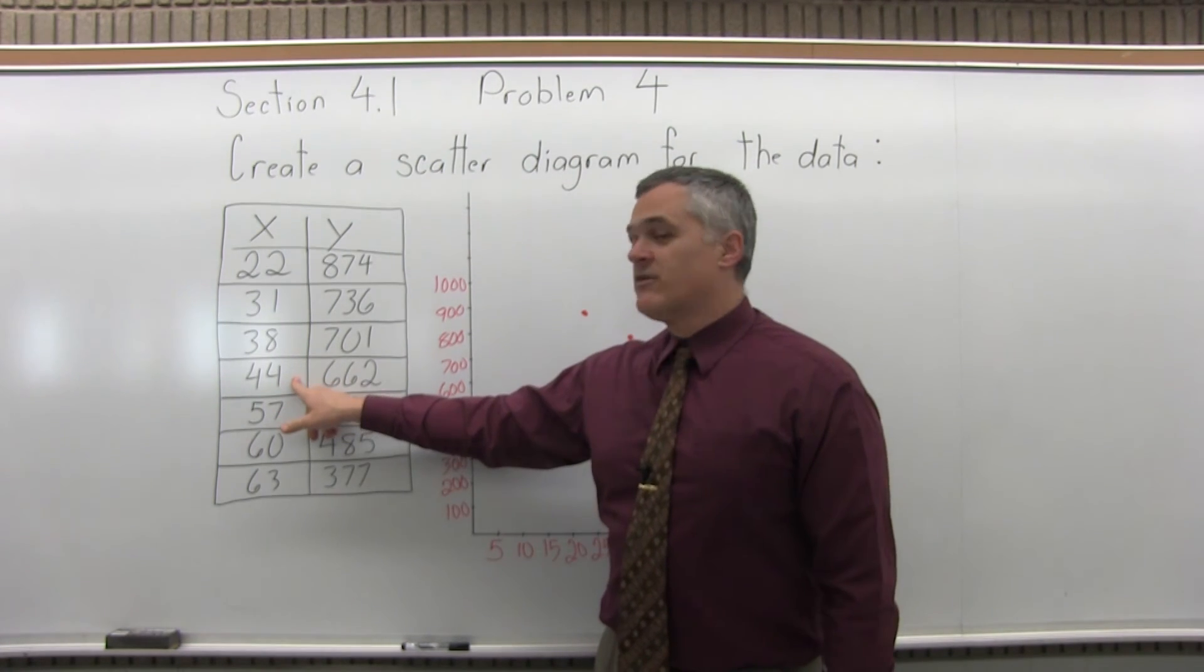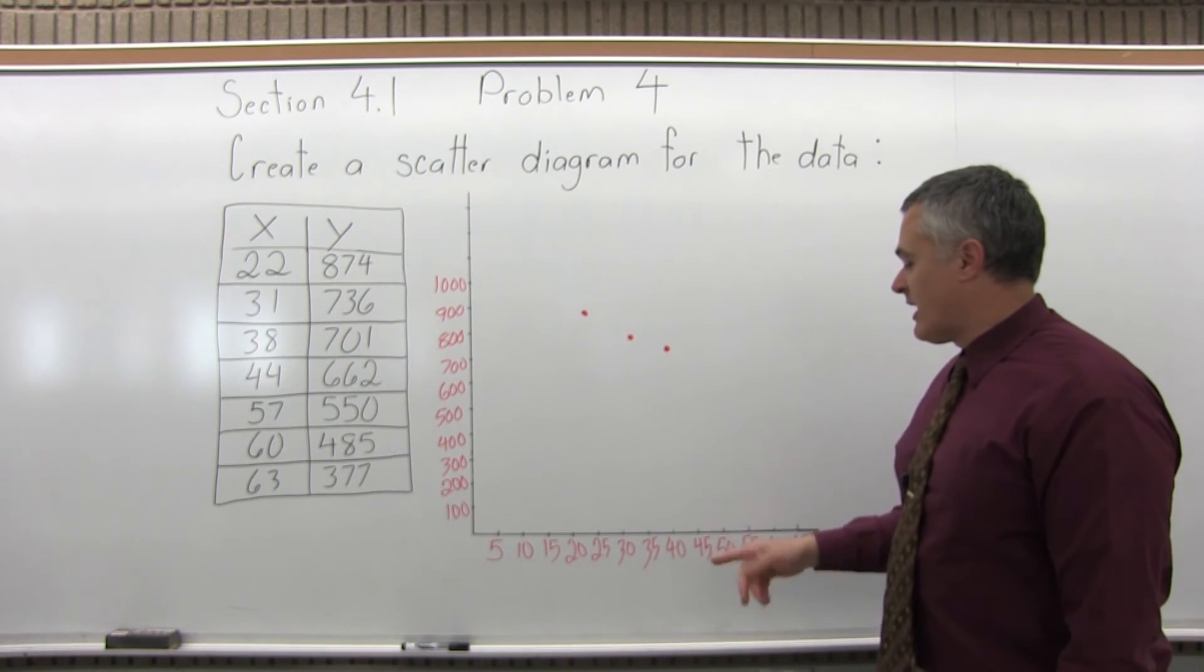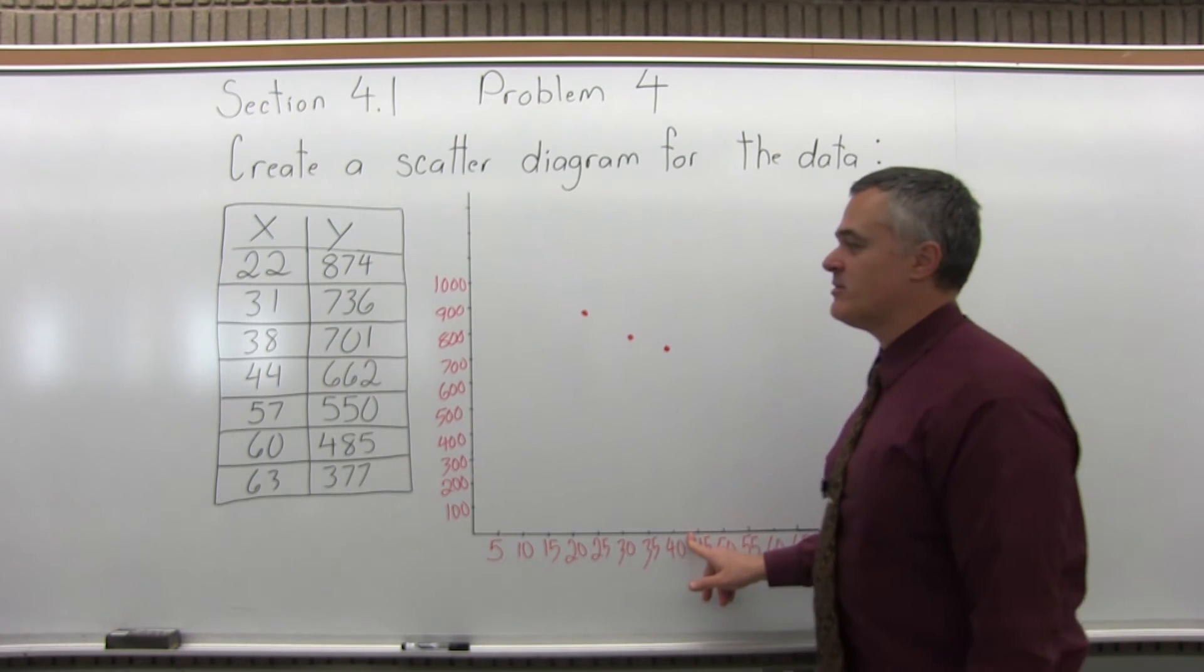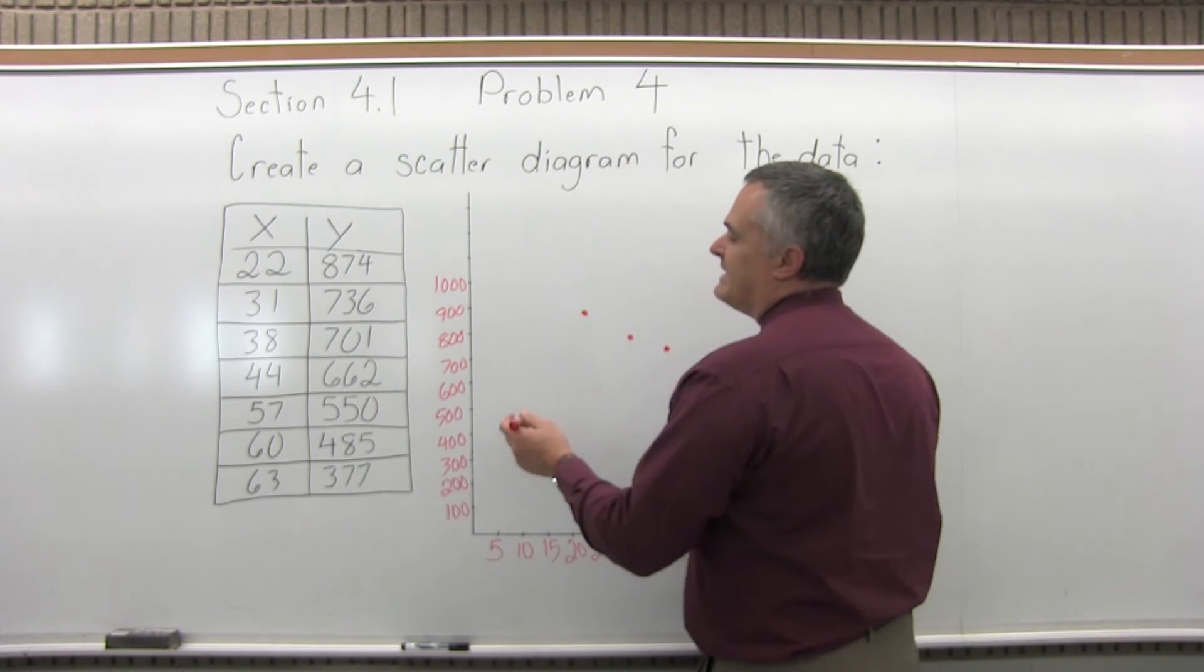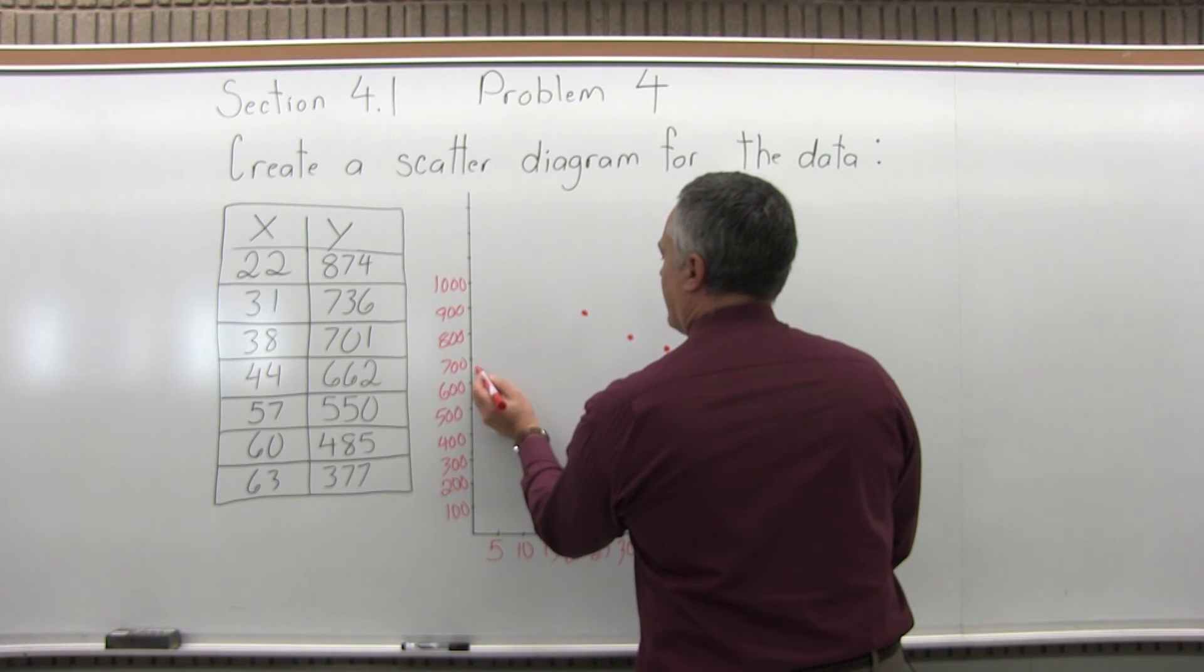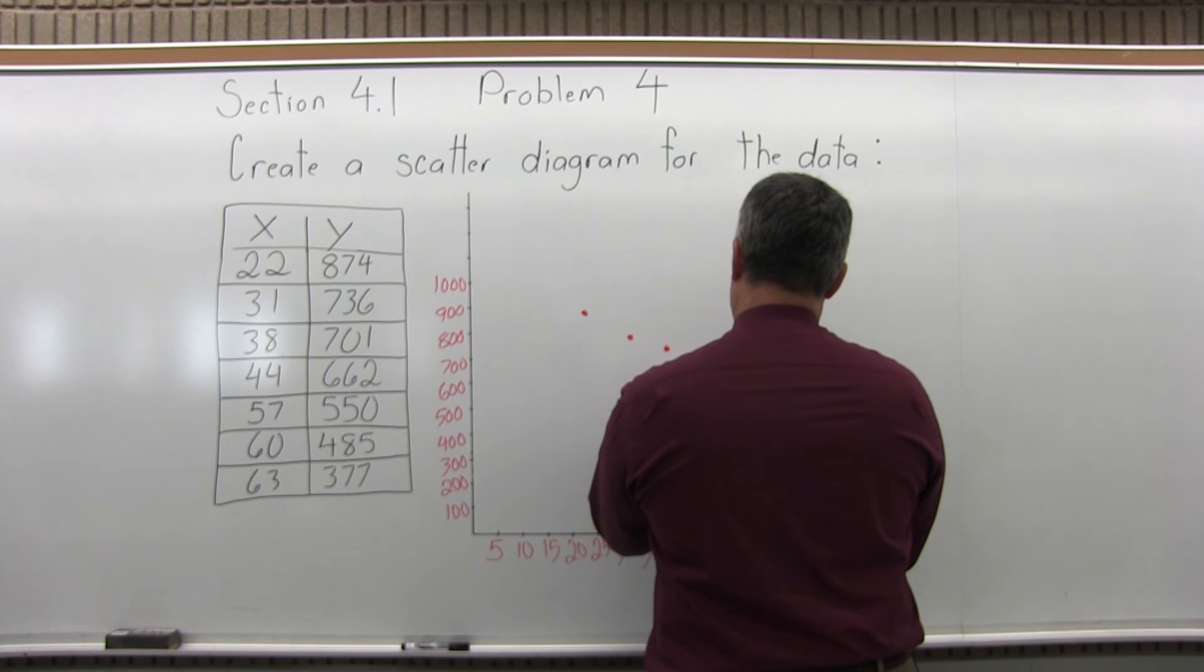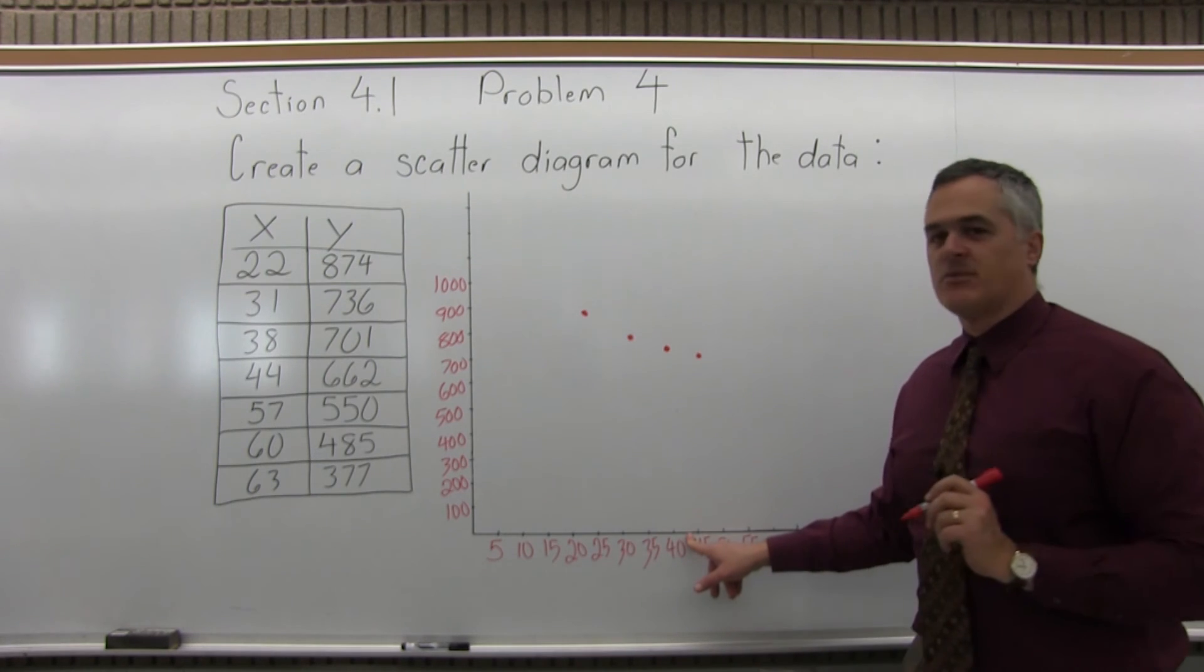The next one down 44 for X, 662 for Y. 44 for the X, again, I don't have exactly 44 on my number scale. So a tiny bit less than the 45 would be good. 662 I also don't have on my number scale. 666 would be 2 thirds of the way between the 600 and the 700. So by eye, that's what it would look like. Follow that out over the 44. Give you something about like that.